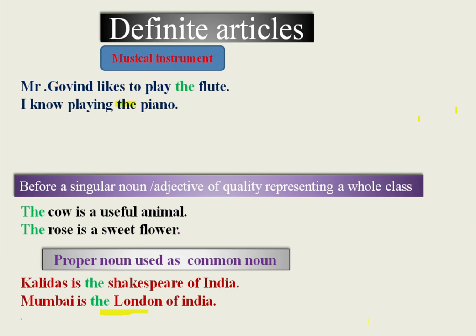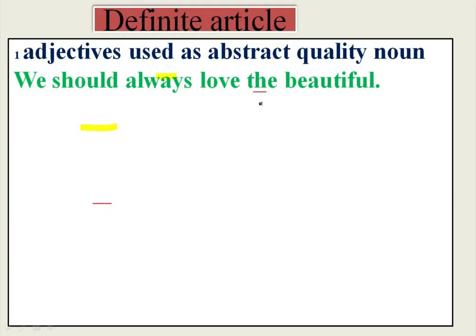'Mumbai is the London of India.' Mumbai, London, and India are all proper nouns. But when you say 'the London,' it is treated as a common noun — meaning the character or future of London has similarity with Mumbai. We can also say 'London is the Mumbai of England' or 'Shakespeare is the Kalidas of England.'